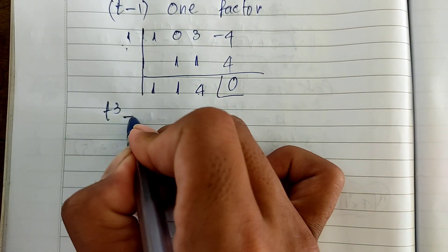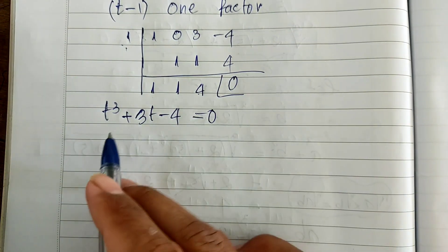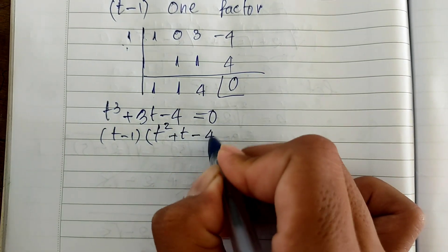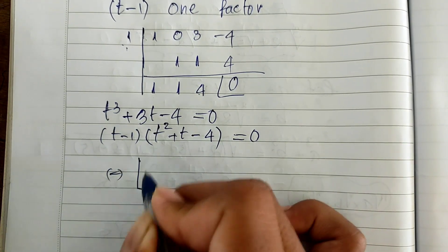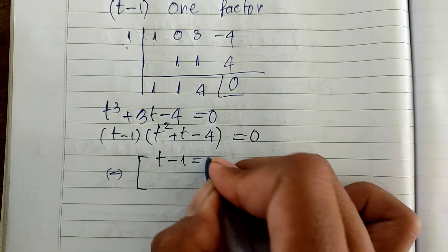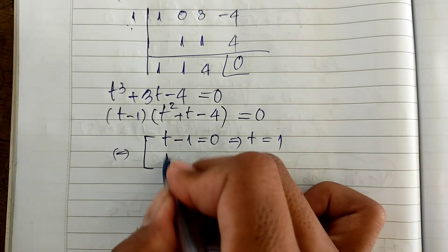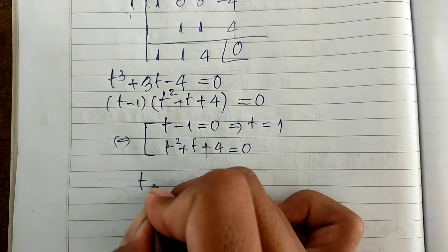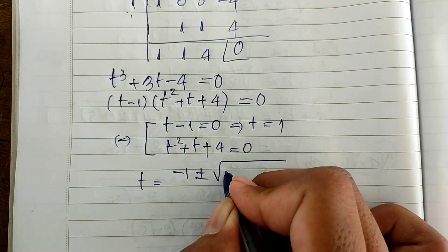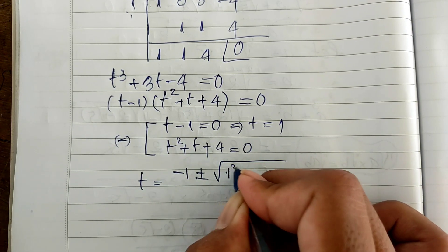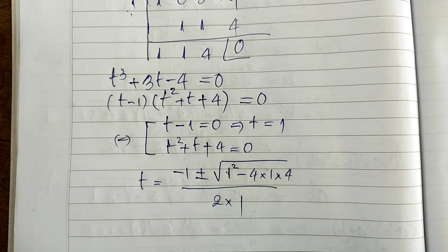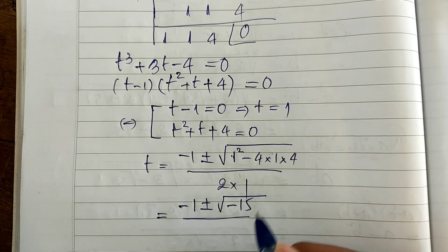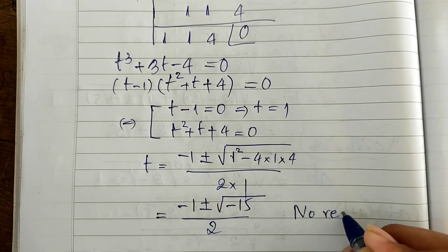So t cubed plus 3t minus 4 equals zero can be written as (t minus 1)(t squared plus t plus 4) equals zero. From t minus 1 equals 0, we get t equals 1. For t squared plus t plus 4 equals 0, using the quadratic formula: t equals (minus 1 plus or minus square root of (1 minus 16)) divided by 2, which gives square root of minus 15 divided by 2. This has no real solution.